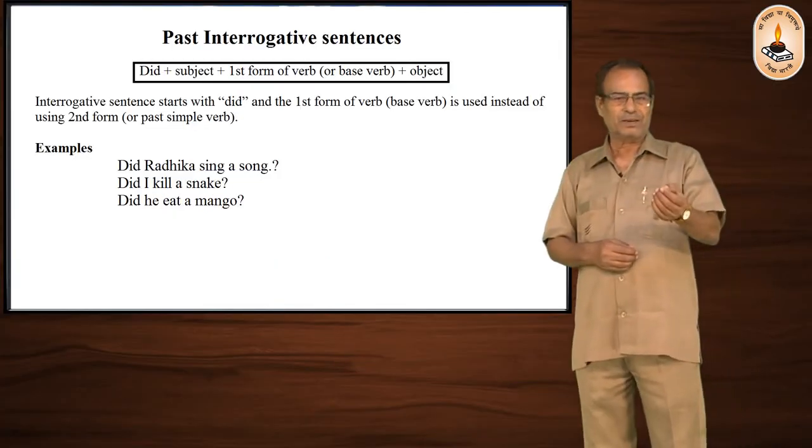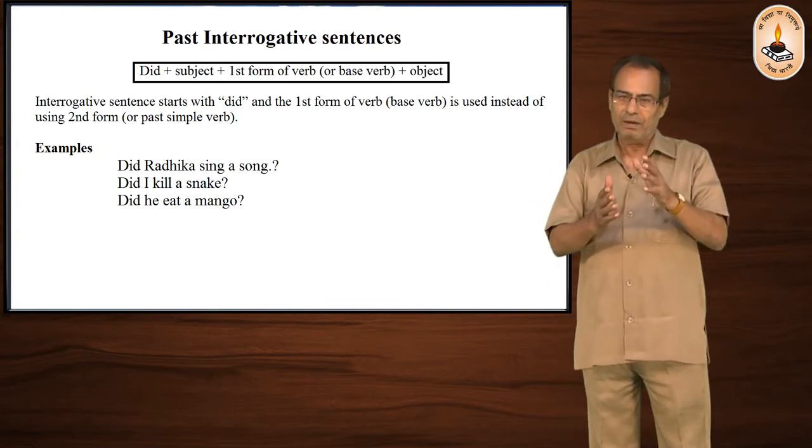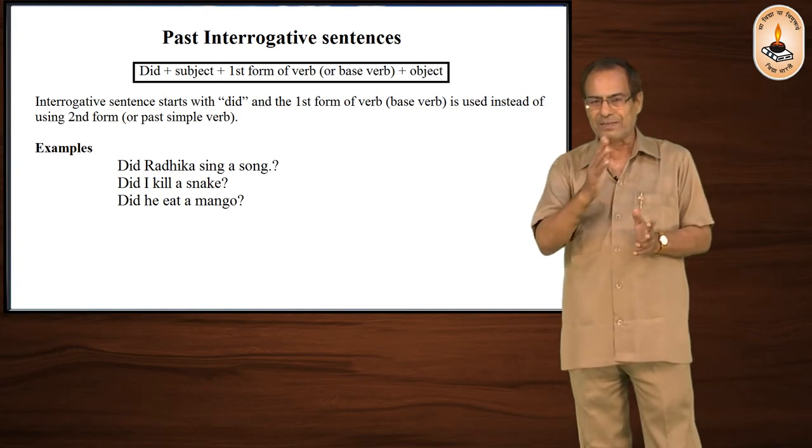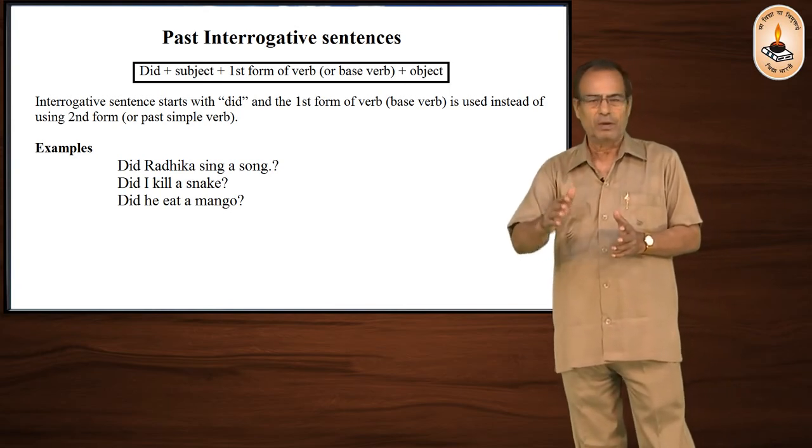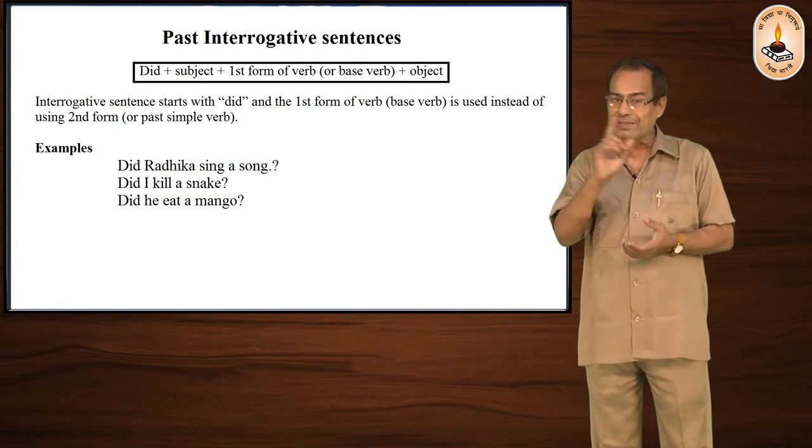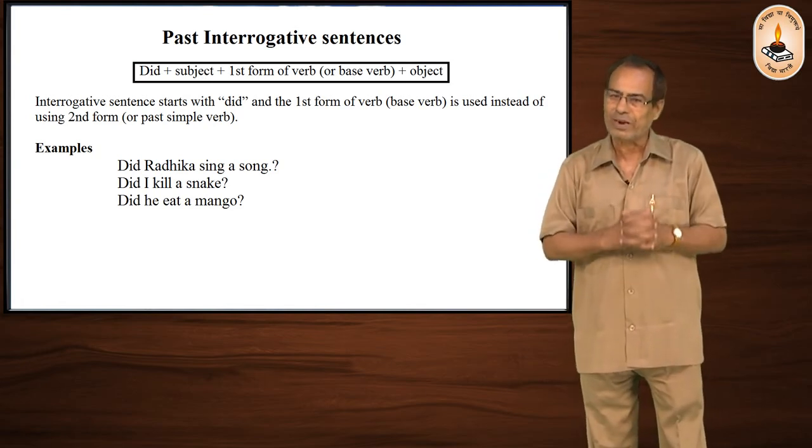When the subject comes after the verb, did is used in the first part, and then subject, then first form, then object, and question mark. When there is a question mark, the sentence will be question sentence or interrogative.